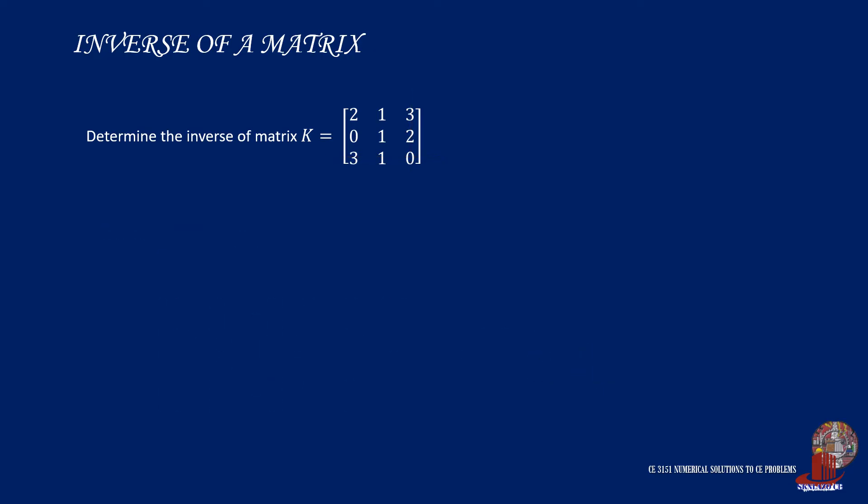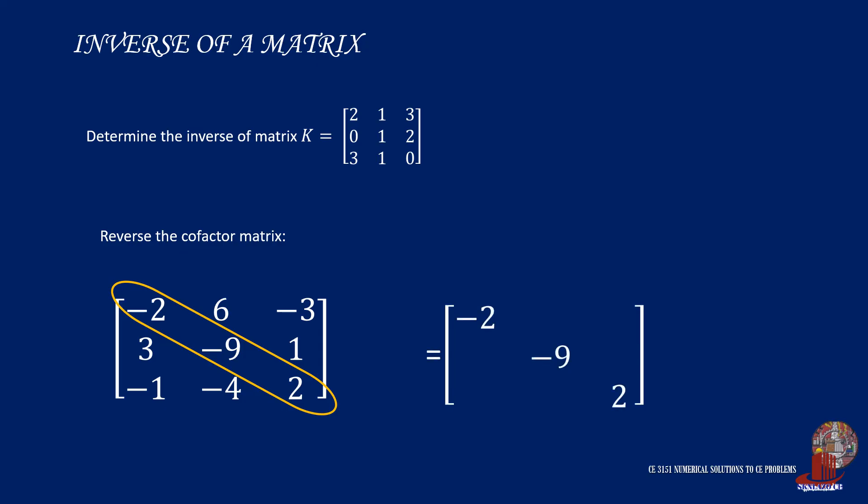Now that you have the cofactor, the additional step is to take the reverse. In this step, the main elements in the main diagonal will be kept. So, negative 2, negative 9, and positive 2 will have the same arrangement. Next, swap the elements from the upper triangle with the lower triangle, so 6 and 3 will swap.